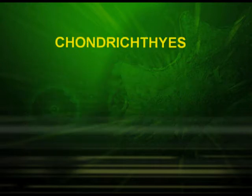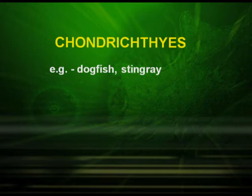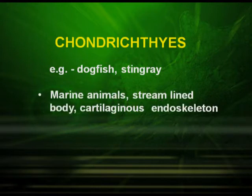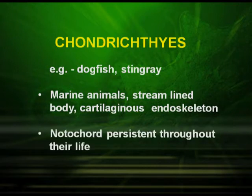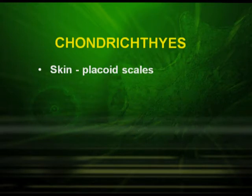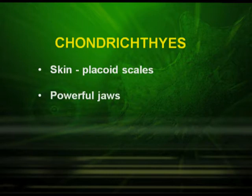Chondrichthyes — dogfish and stingray come under Chondrichthyes. They are marine animals with a streamlined body and cartilaginous endoskeleton. The notochord is persistent throughout their life. The skin is made up of placoid scales and they have a very powerful jaw.